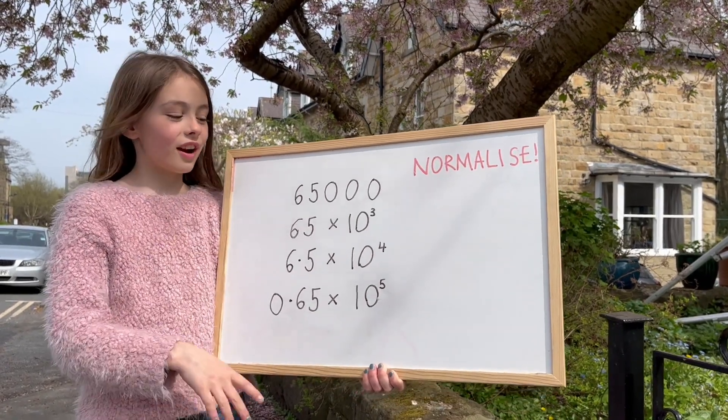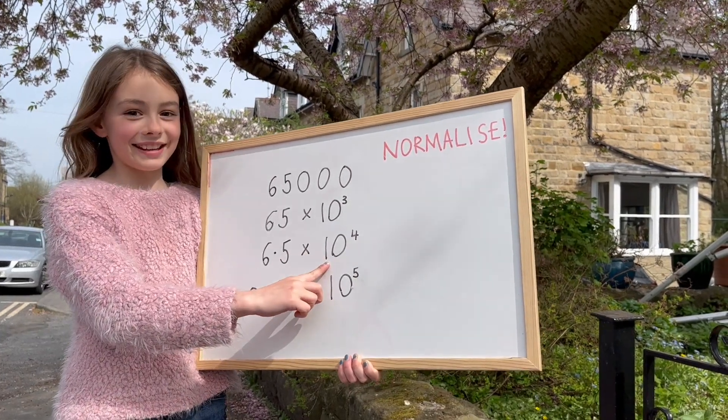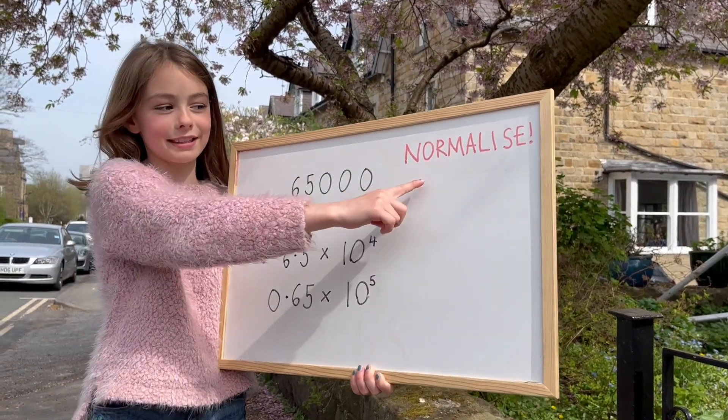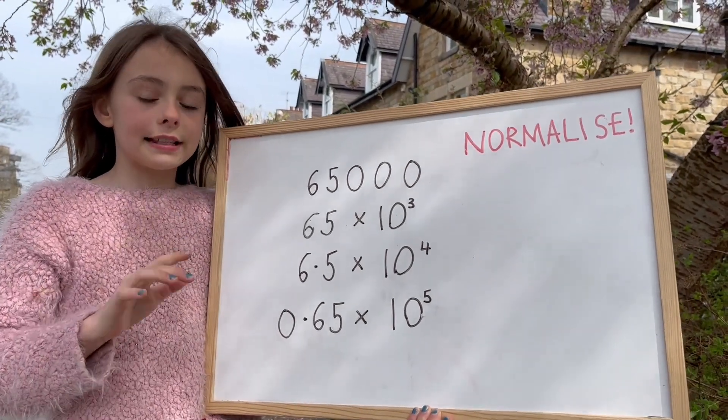Having all these ways to write one number could get confusing, so that's why we all agree to use one, this one. That's called normalized standard form. We pick the left hand side to be between 1 and 10.